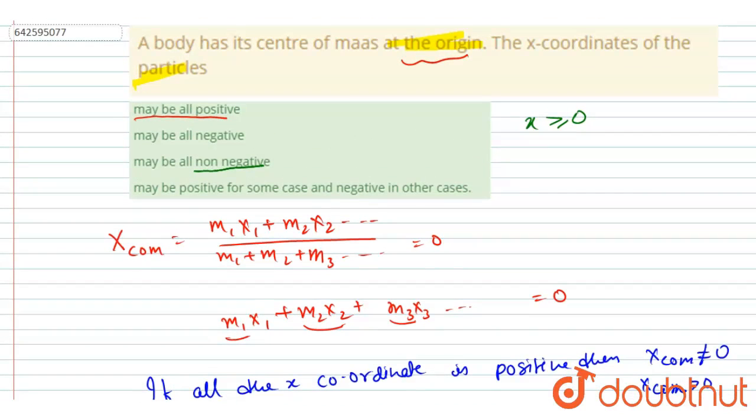And if I talk about the fourth statement, may be positive for some cases and negative for some cases, obviously it is quite possible if you see this expression. So some of the expression may be positive and some of the expression may be negative, and their summation may be equal to zero.